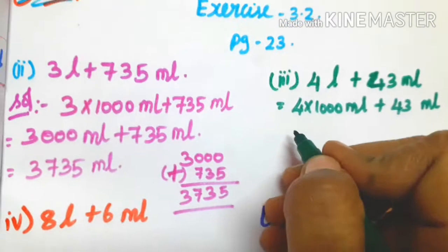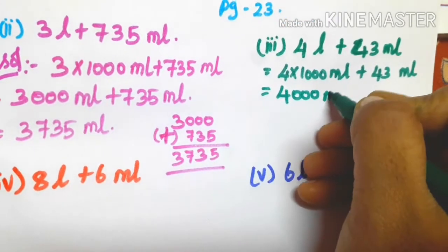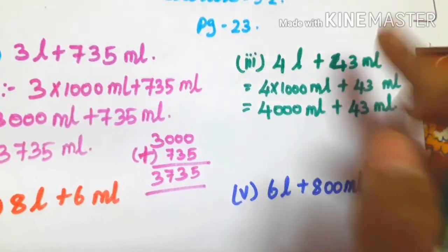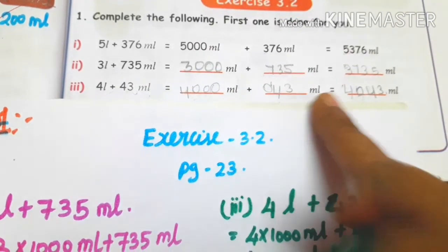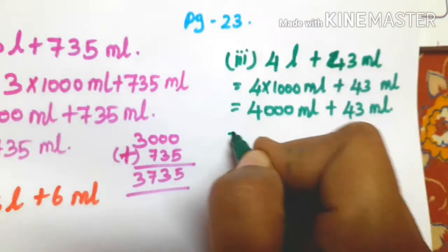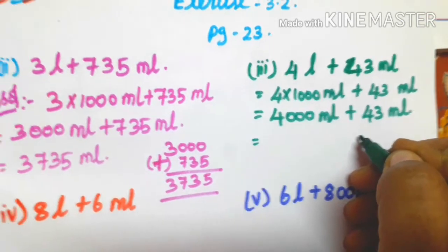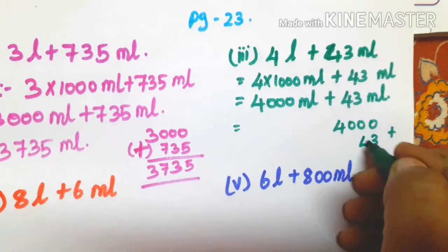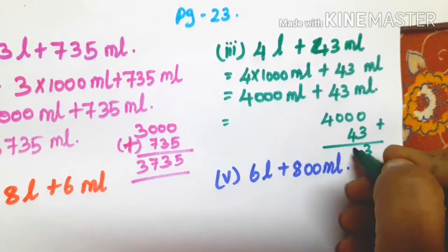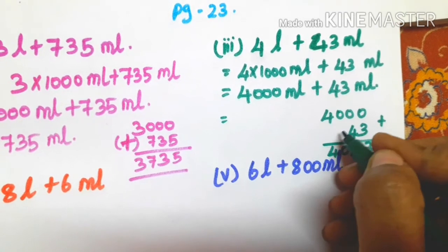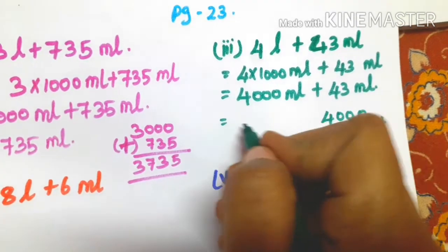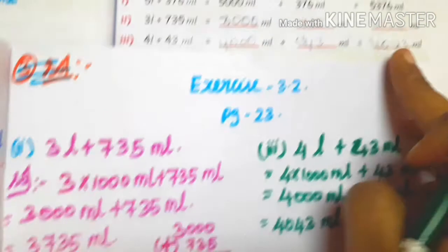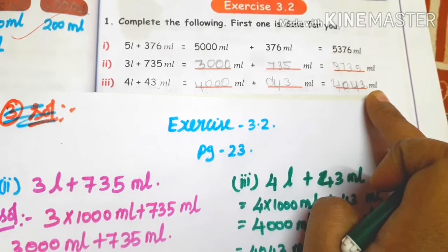Now for the third sum: 4 litres converts to 4000 millilitres, plus 43 millilitres. How to add: 4000 plus 43. So 0 plus 3 is 3, 0 plus 4 is 4, next 0, next 4. So the answer is 4043 millilitres.